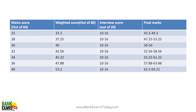If you scored 25 marks in the Mains exam — that is out of 60 — then out of 80, that becomes 63.3.